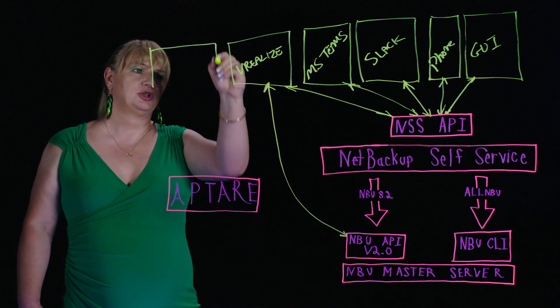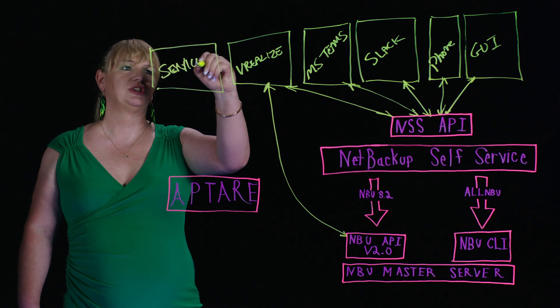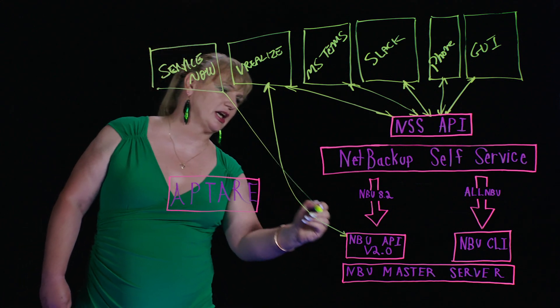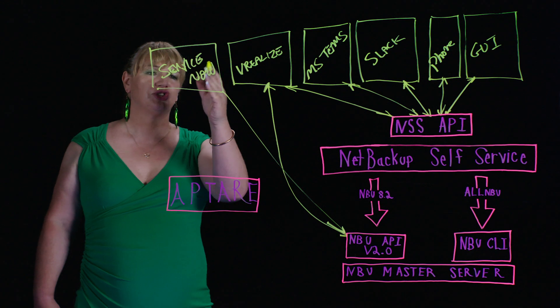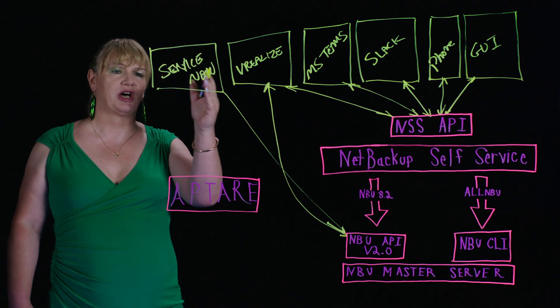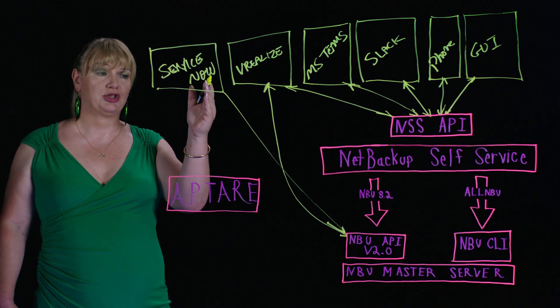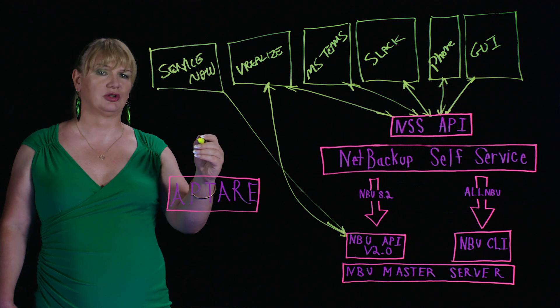With 8.2, which is really new, we're adding in an interface into ServiceNow. And this only works with 8.2. And again, it actually uses the API here. So again, it gives you the similar kinds of capabilities. Via ServiceNow, you can decide that you want to back up a machine, you don't want to back up a machine, you want to change the protection level, or you actually want to do a restore.